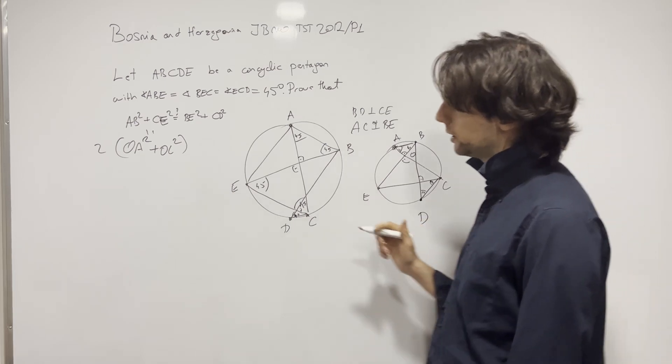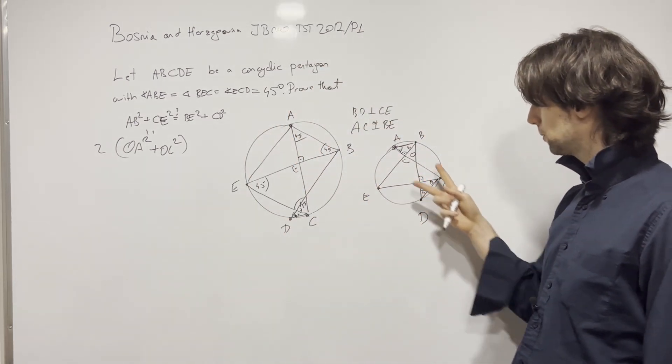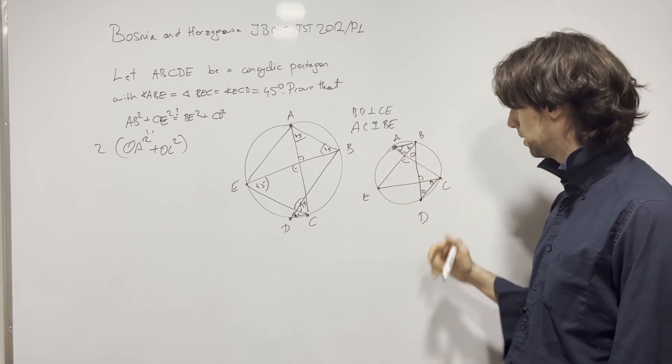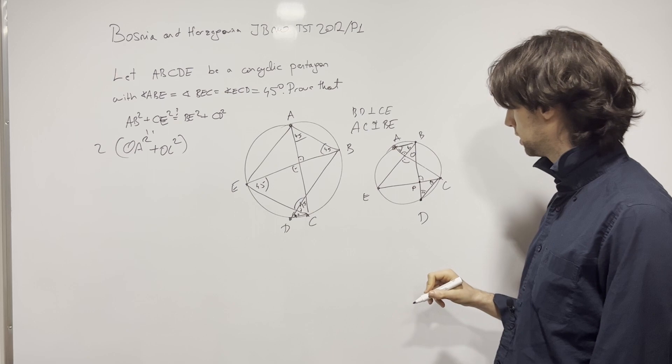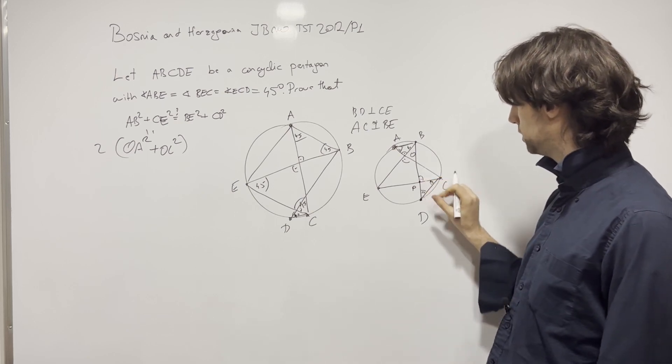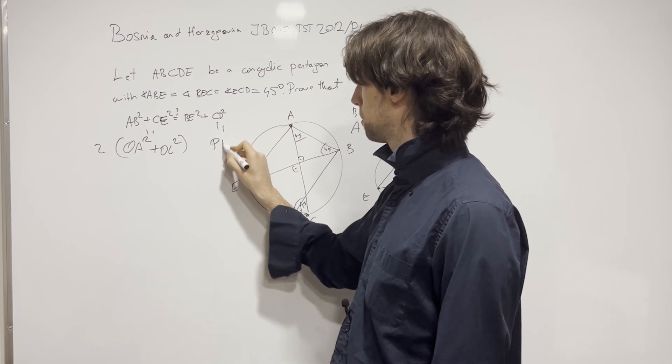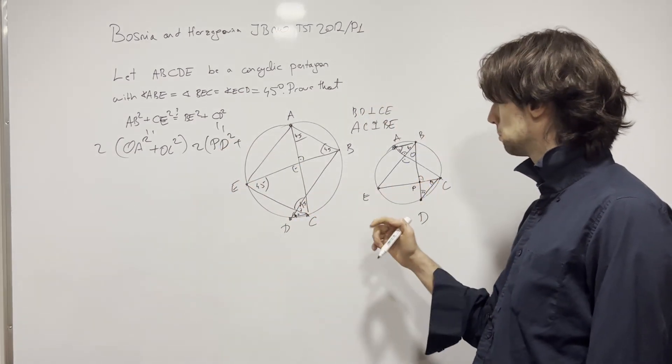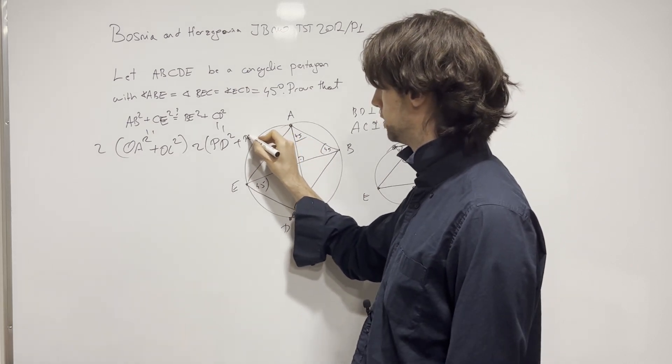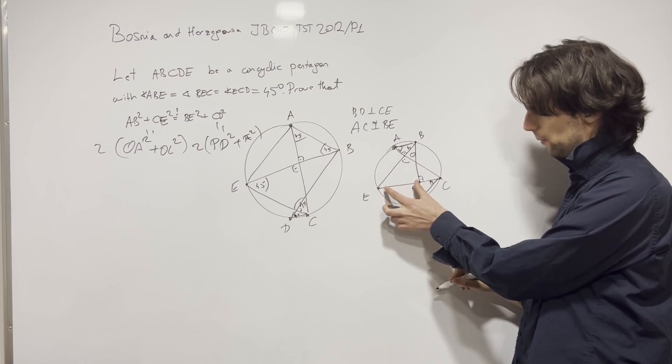And now, we need CD squared. Now, we have CD squared plus EB squared. Let's really leave this as point P. Then we have that as PD squared plus PC squared. So this is going to be PD squared, two times PD squared plus PE squared.